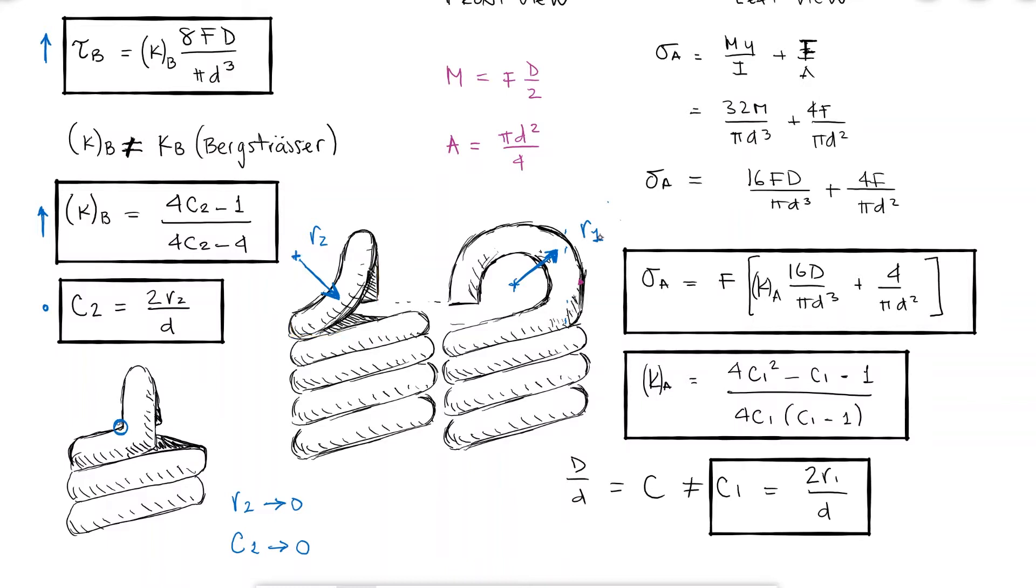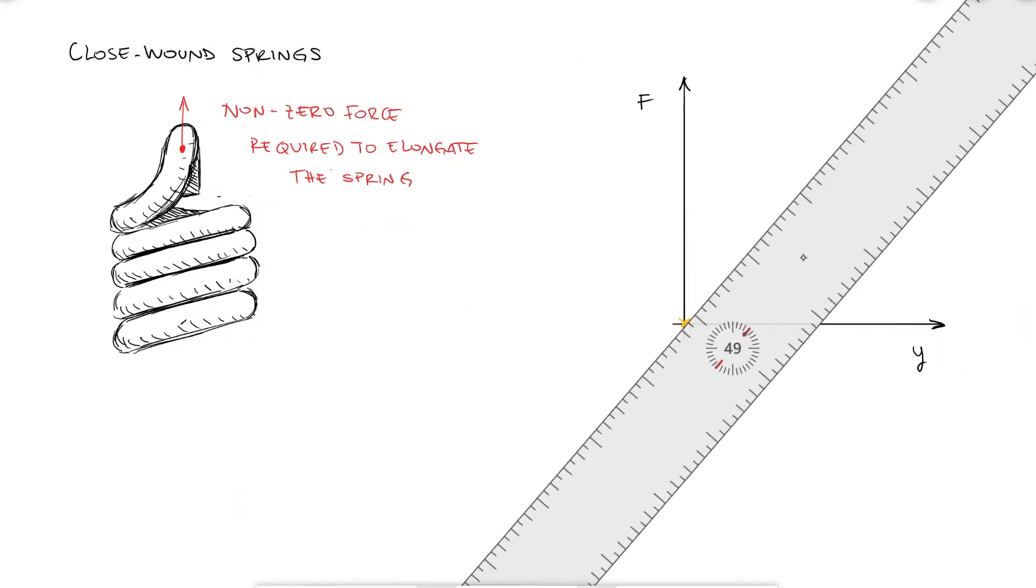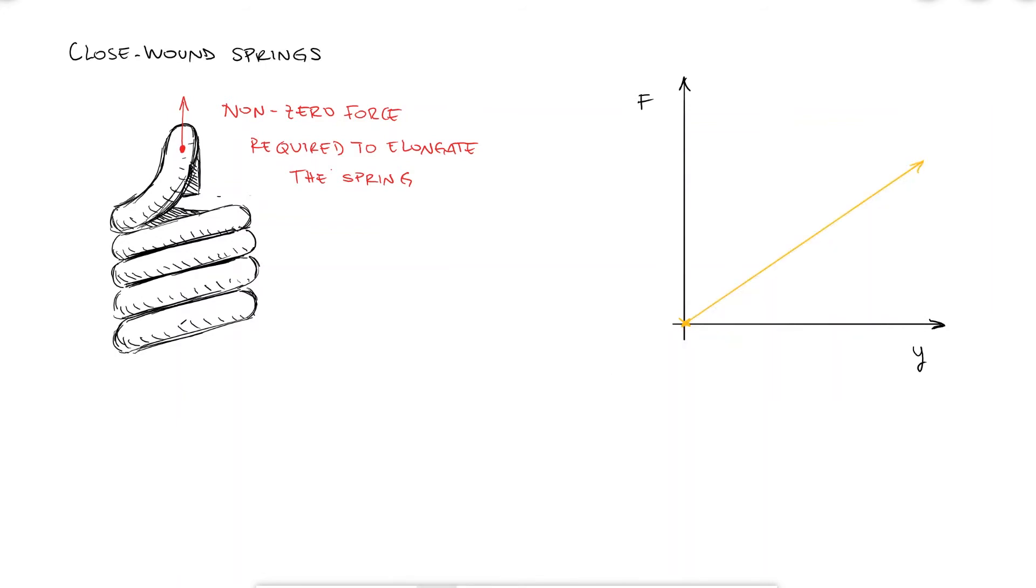In addition to these differences, namely the additional normal stresses and the different correction factors, like I mentioned at the beginning, extension springs that are made with coils in contact with each other or close wound springs, manufacturers add an initial tension so that when the spring is stretched the force does not begin at zero. If there was not an initial tension then the force would be exactly zero as you start pulling on the spring and linearly increase as you keep pulling. Ideally you want the spring to already generate a reaction force as soon as the spring starts stretching.